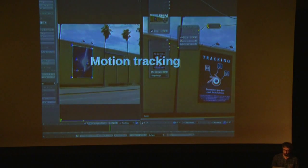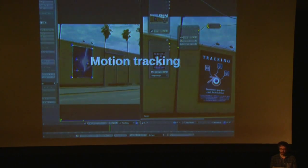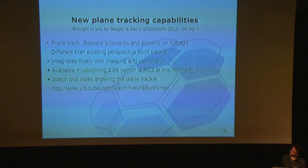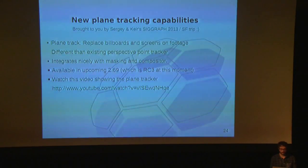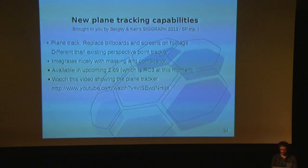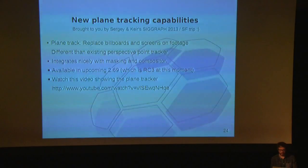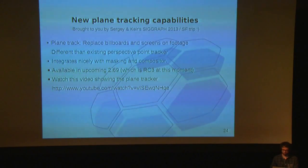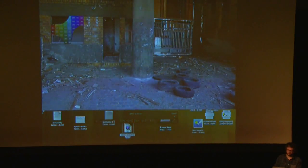On this picture you can see a poster on the side of a highway, and in the second frame it's been replaced with a little image about tracking — this is planar tracking. Recently we added a whole new version of planar tracking. We already had a planar tracker for tracking individual points, but we added a new one intended for tracking large regions that works a little differently. The purpose of the planar tracker is to replace billboards or screens in footage. This new planar tracker integrates nicely with masking and compositing and should be available shortly.